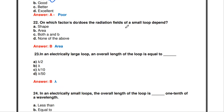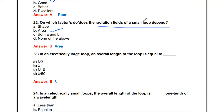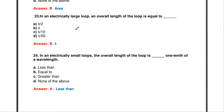On which factor does the radiation field of a small loop depend? The options are shape, area, both, or none. The answer is area. The area of the small loop is the factor that affects its radiation field — not the shape. Depending upon the area of the small loop, the radiation field will vary.